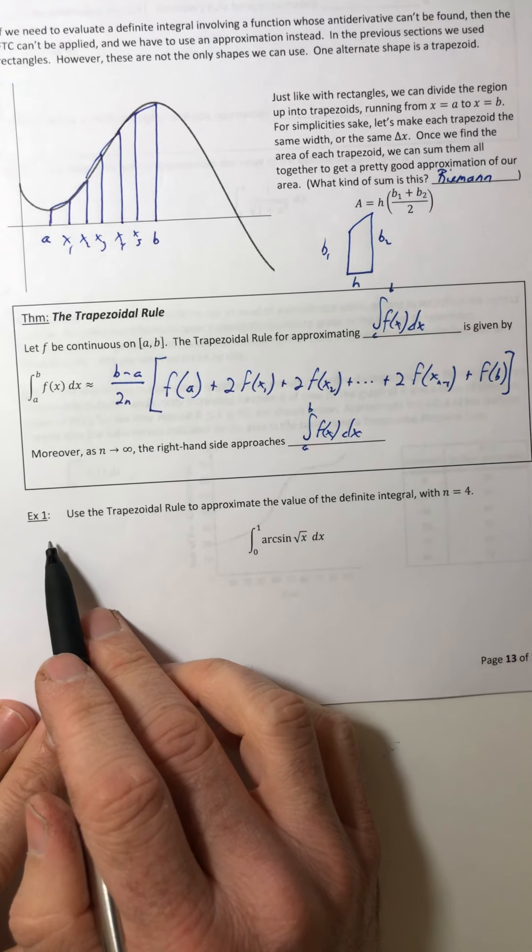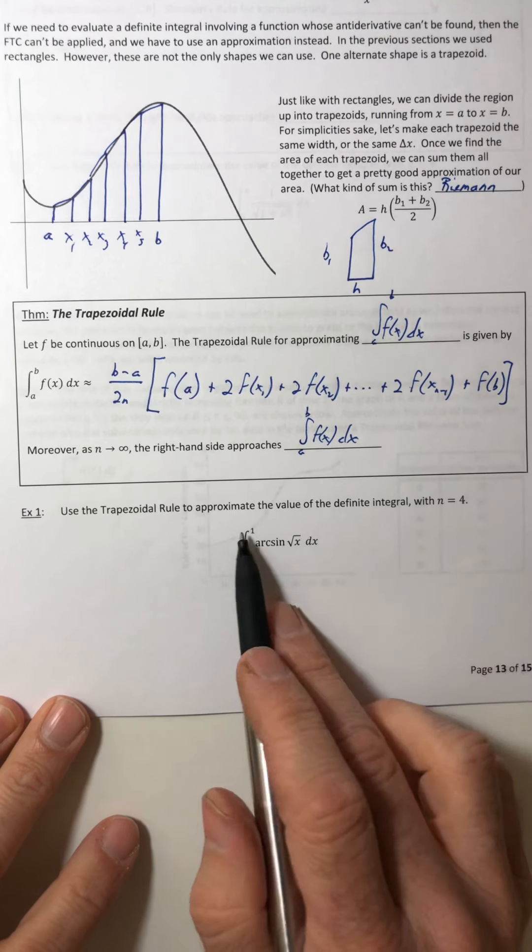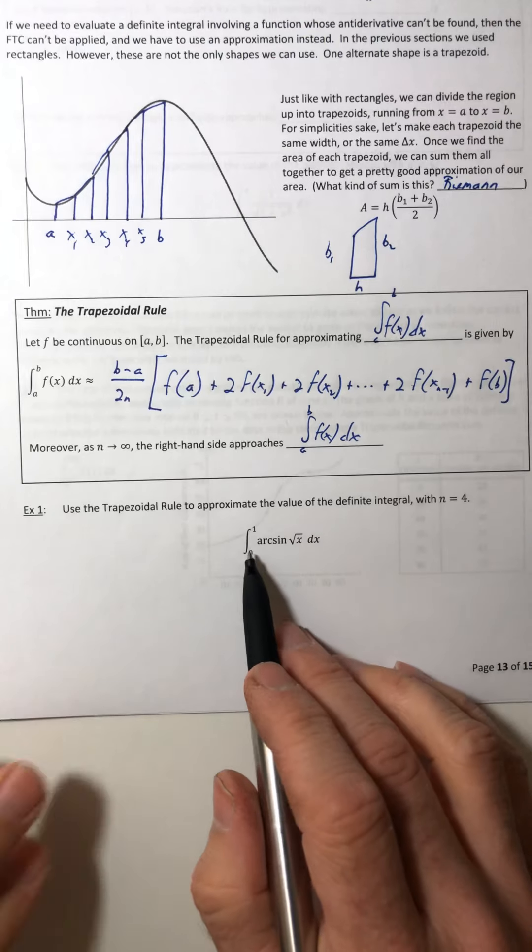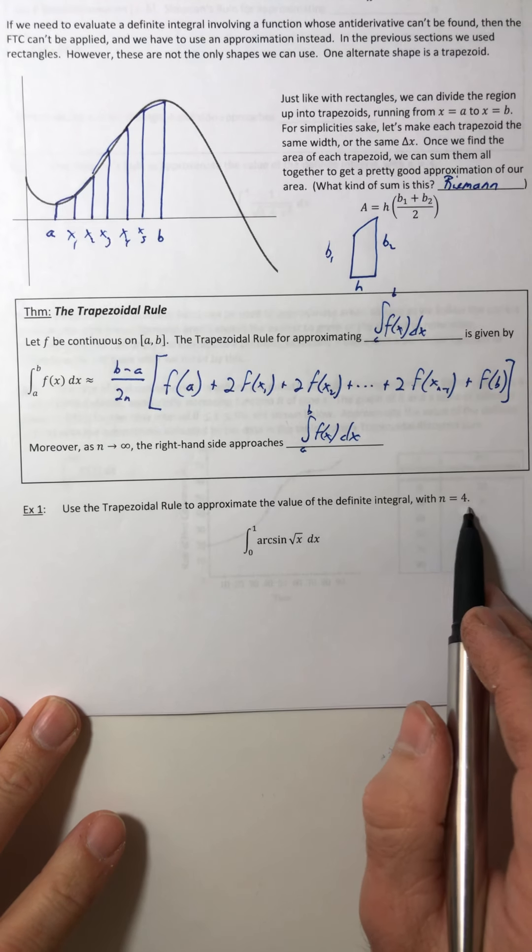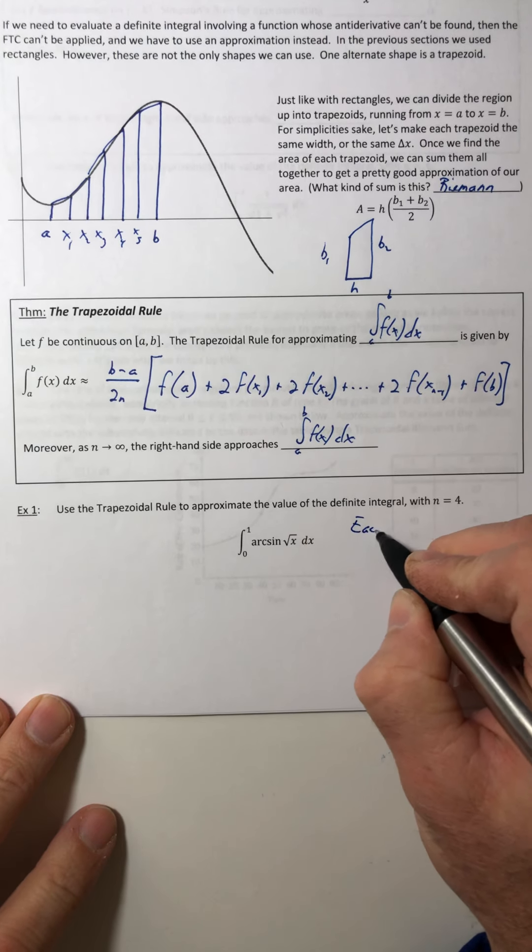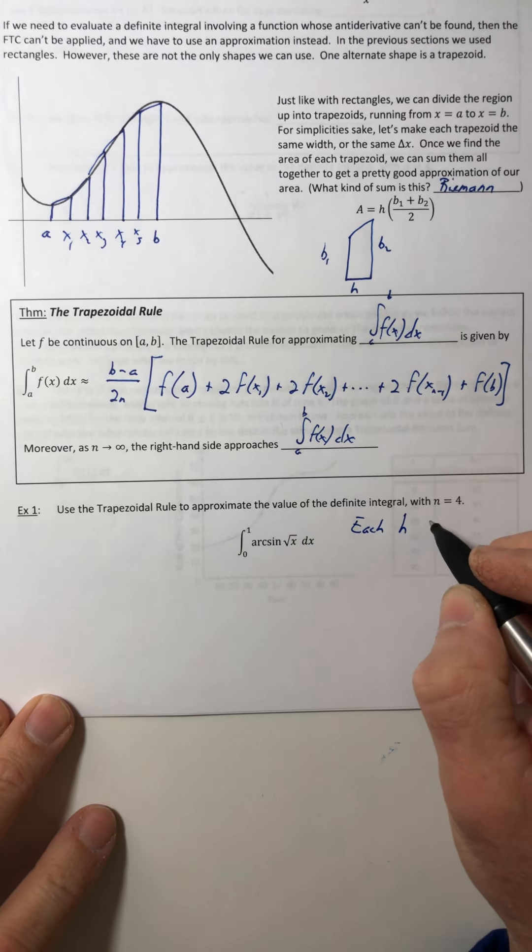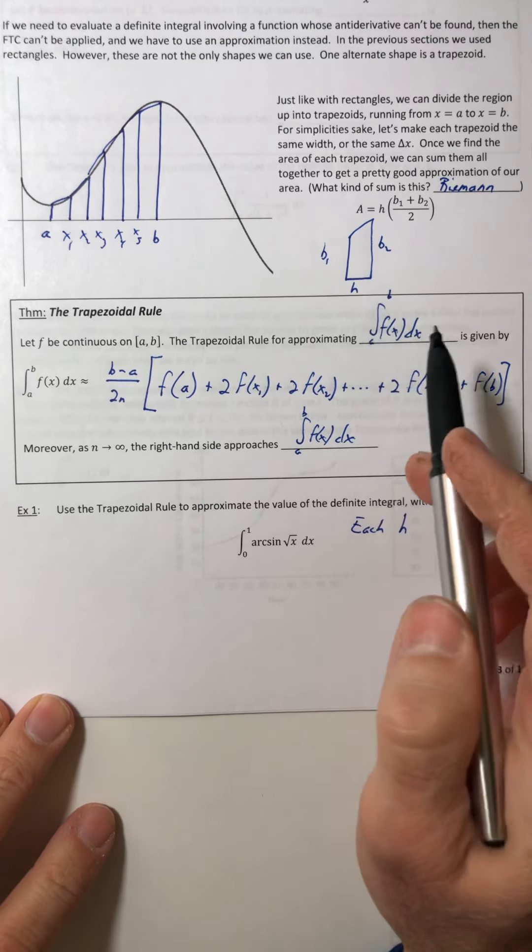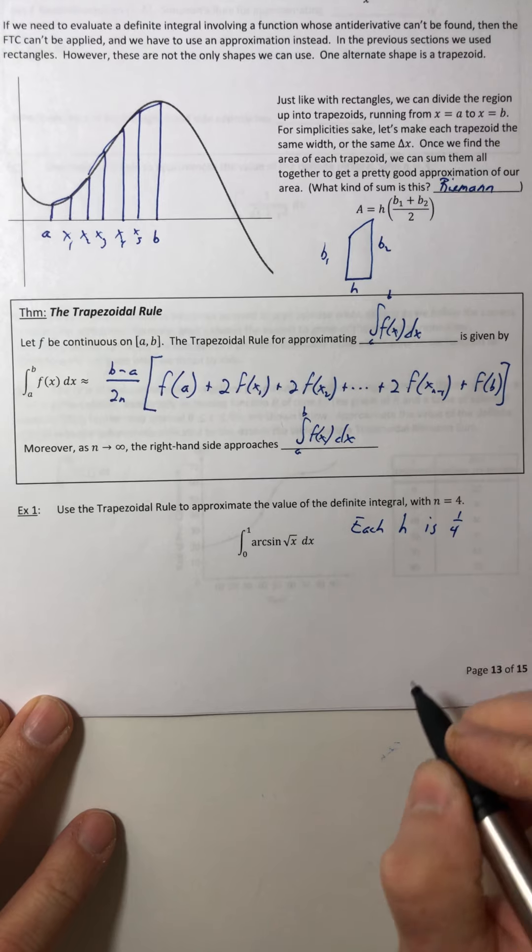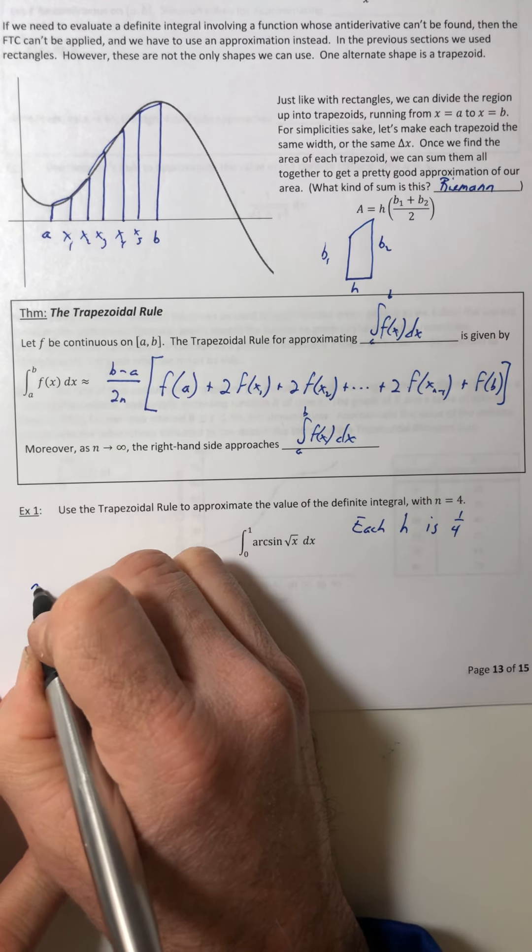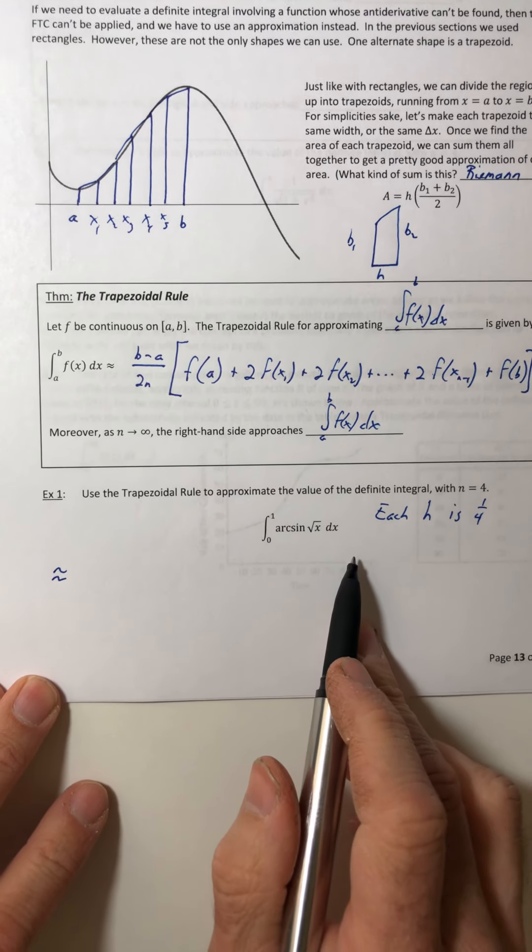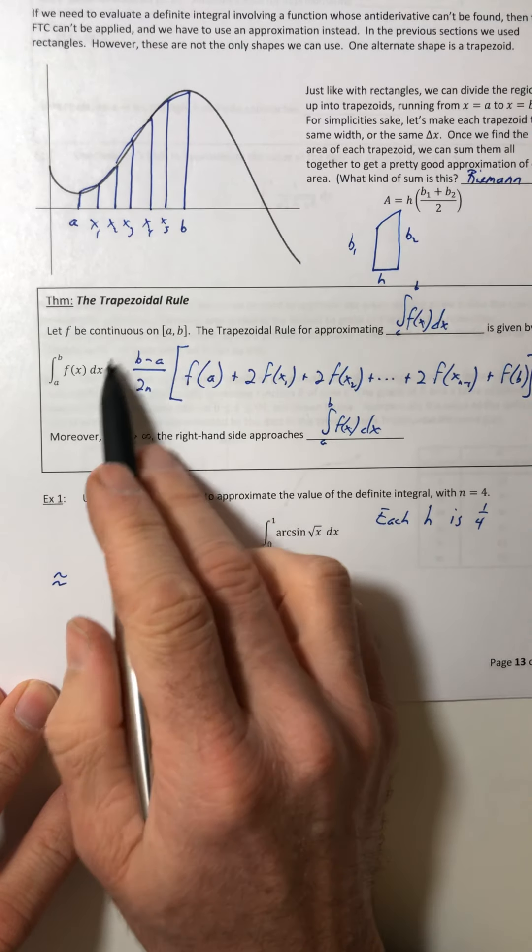All right so let's go ahead and use it. Use the rule to approximate the value of the definite integral with n is equal to four. So you're going from zero to one and you have to have four trapezoids. So each h or height, because remember the height is horizontal, is a fourth.